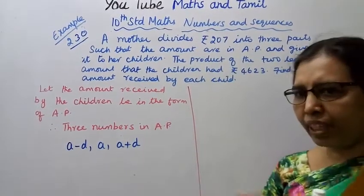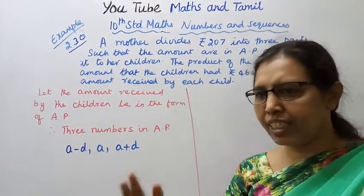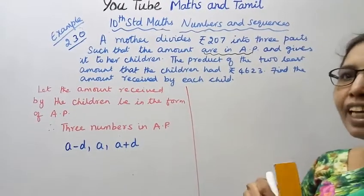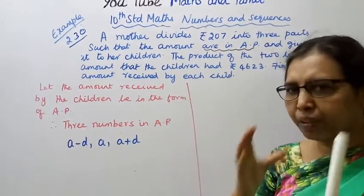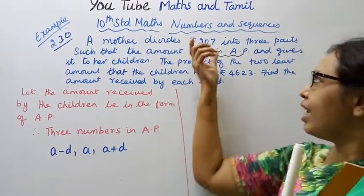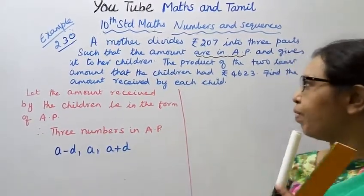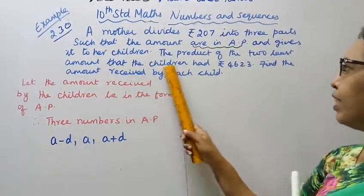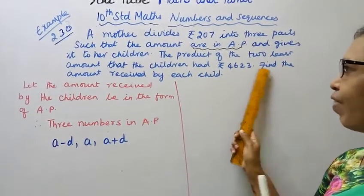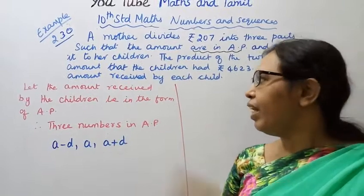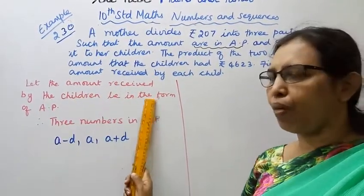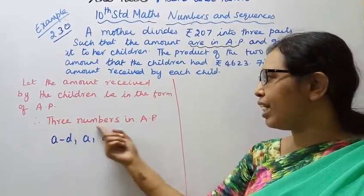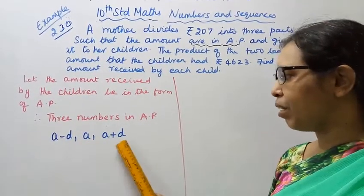207 amount is divided among 3 children. The amounts are divided as an AP. Let the amounts received by the children be in the form of AP: a minus d, a, and a plus d.